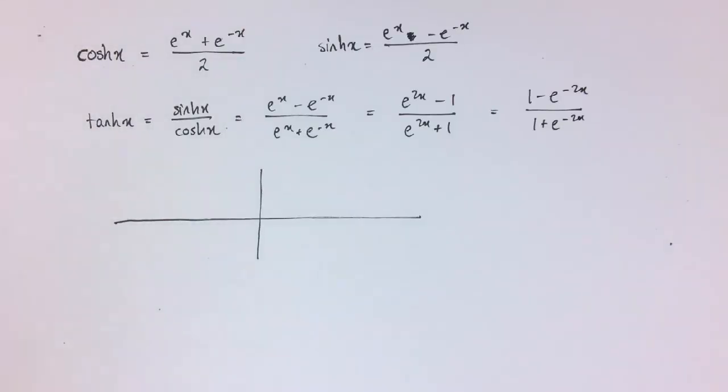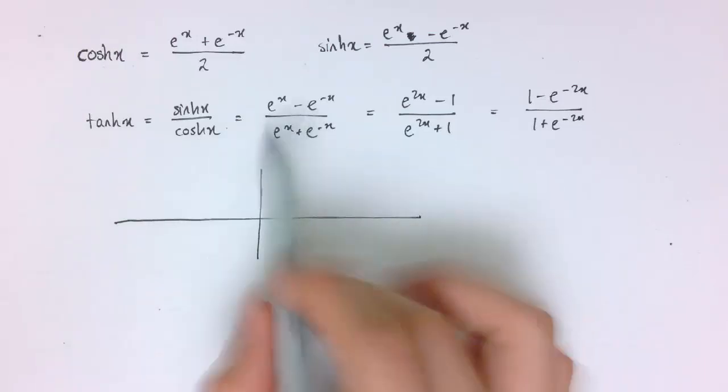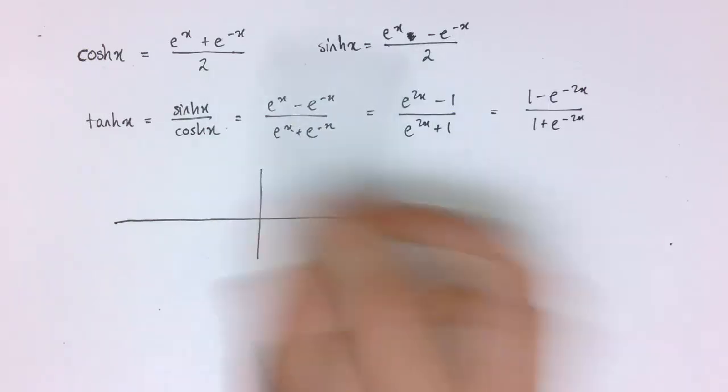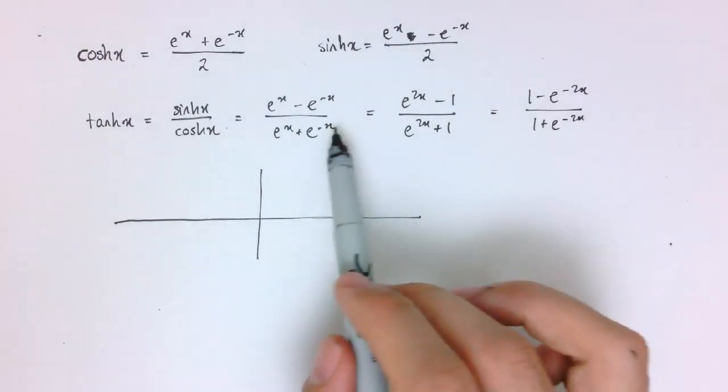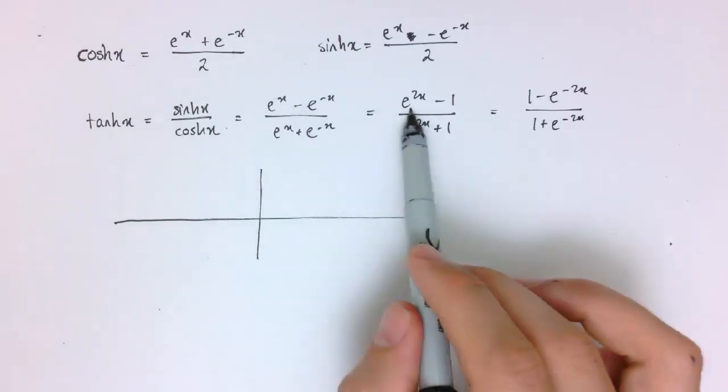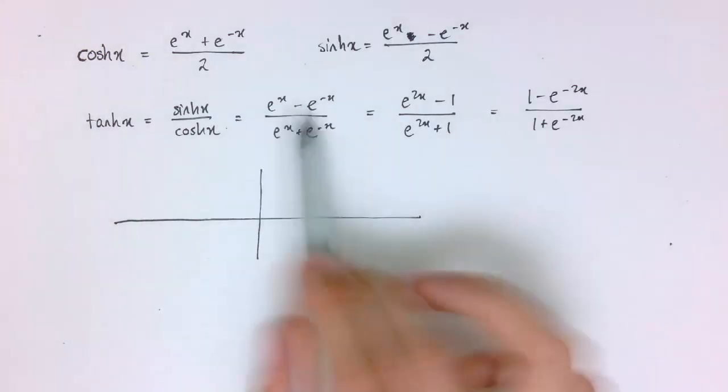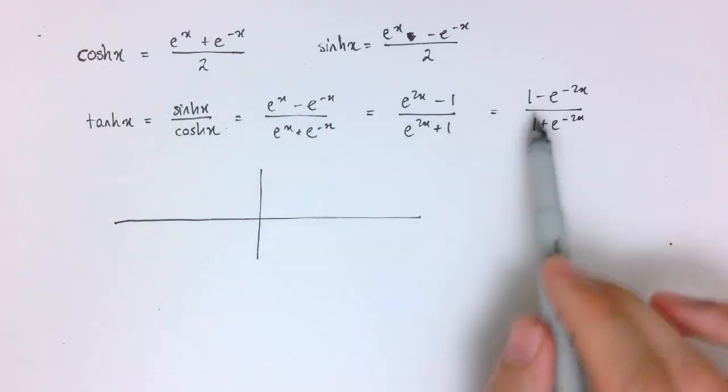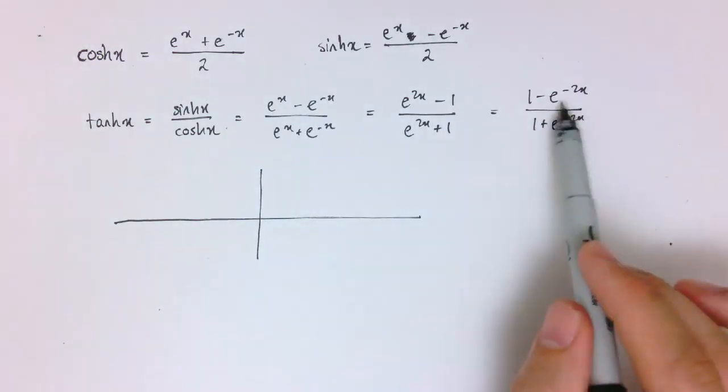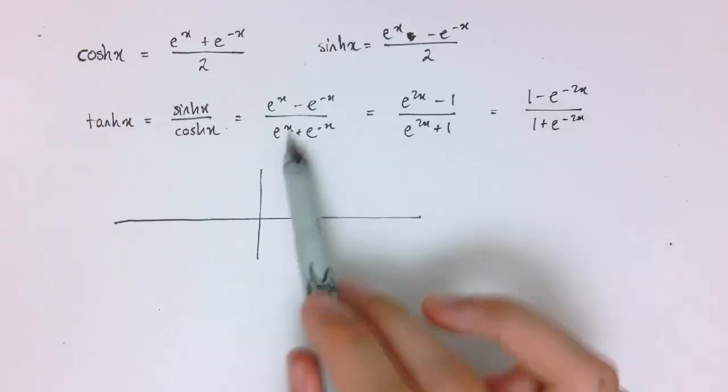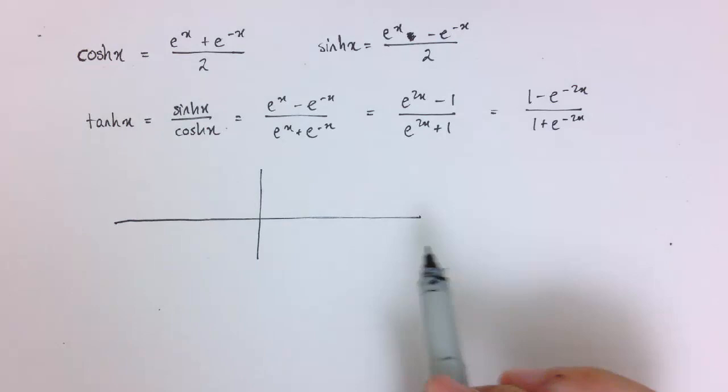The next one to think about is tanh. Tanh is sinh over cosh, and we've written it in its exponential form. Actually, two useful exponential forms of tanh. Once we've divided and cancelled the twos, if I multiply by e to the x, I get e to the 2x minus 1 over e to the 2x plus 1. Or I could multiply by e to the minus x and get 1 minus e to the minus 2x over 1 plus e to the minus 2x.